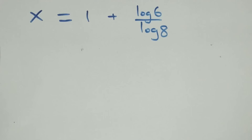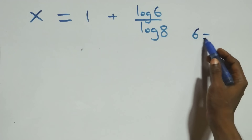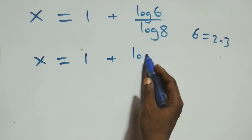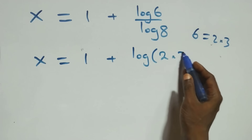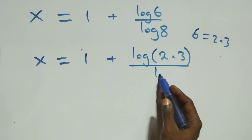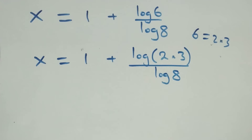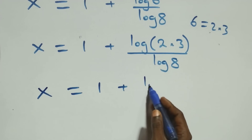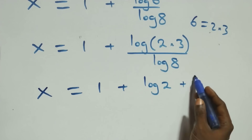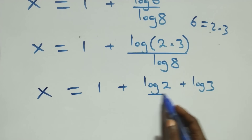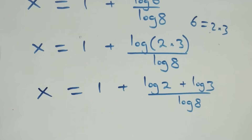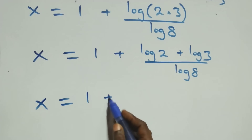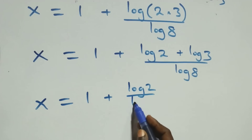Now, we can rewrite 6 as 2 times 3. And what we have becomes x equals to 1 plus log(2 × 3) over log 8. This also follows the log product rule, and we have x equals to 1 plus log 2 plus log 3 over log 8. Then, next step, we can express 8 as 2 cubed. We also separate this into 2 fractions, and we have x equals to 1 plus log 2 over log 8 plus log 3 over log 8.